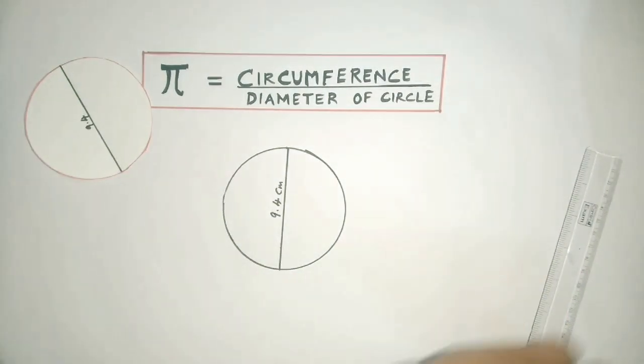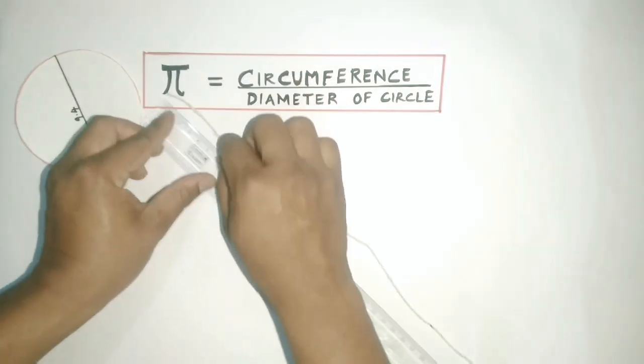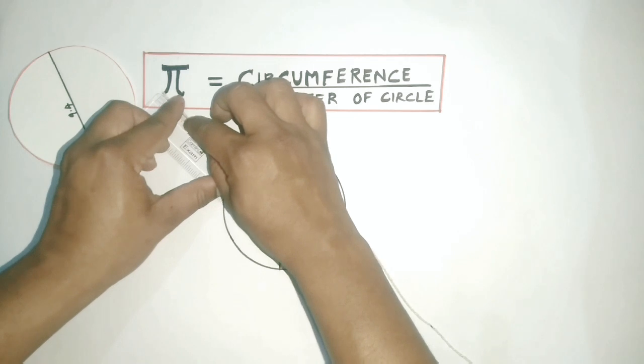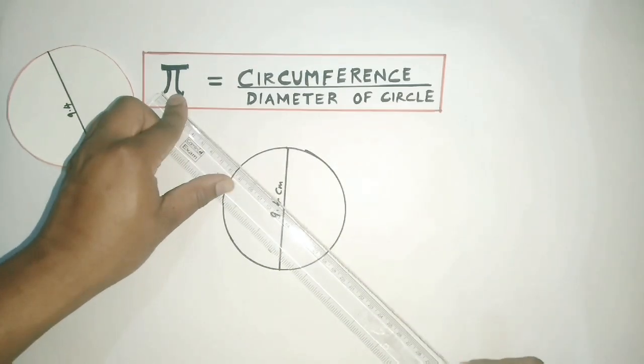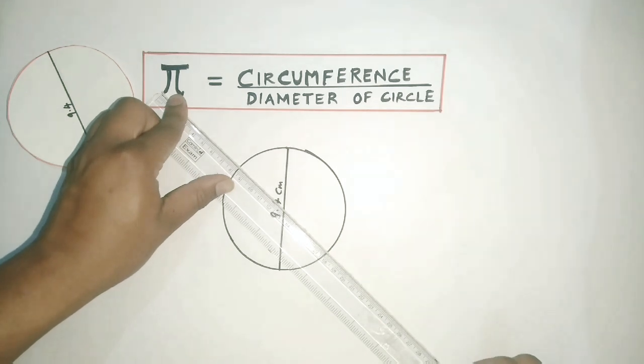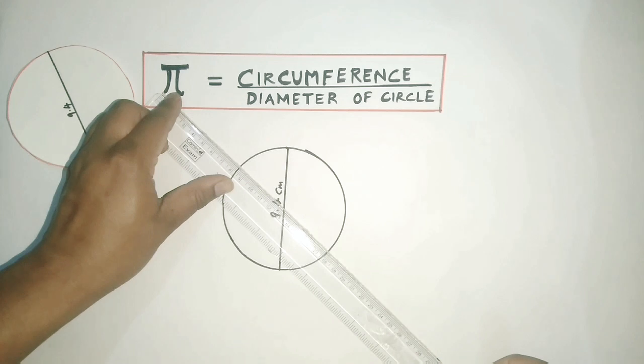I measure the length of the thread using a ruler. Remember, the length of the thread is nothing but the boundary of the circle, which is the circumference. If I measure accurately, I get 29.6. So the length of the thread is 29.6, therefore I can say the circumference is 29.6.